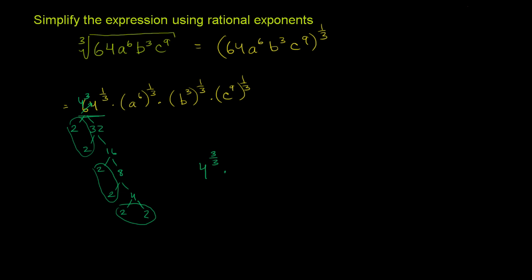Then over here, I have a to the sixth, and then that to the 1 third power. That is going to be a to the sixth times 1 third power, or a to the 6 thirds power. Then I have b to the third, and then that raised to the 1 third, so that's going to be, we literally can multiply exponents here. So we have b to the 3 over 3 power. And then finally, we have c to the ninth, and then that raised to the 1 third power. So that is c to the 9 over 3 power.